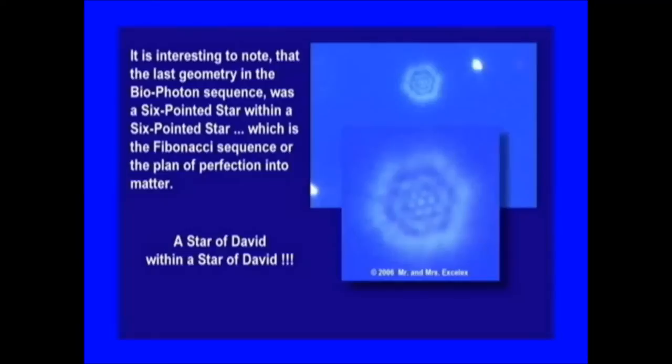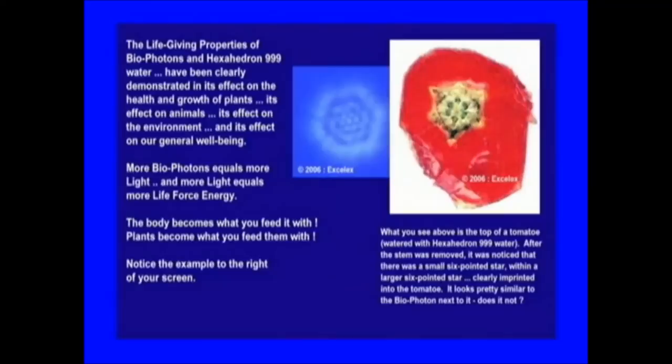It is interesting to note that the last geometry in the biophoton sequence was a six-pointed star within a six-pointed star - which is the Fibonacci sequence, or the plan of perfection into matter - a Star of David within a Star of David. The life-giving properties of biophotons and Hexagon 999 water have been clearly demonstrated in their effect on the health and growth of plants, on animals, on the environment, and on our general well-being. More biophotons equals more light, and more light equals more life force energy.